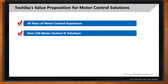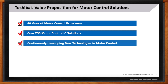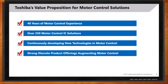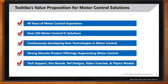Spinning a motor is one thing, but making a motor efficient is a different thing — it requires a lot of new techniques, so we continue to invest and bring in new technologies. We have a strong discrete group with hundreds of MOSFETs and IGBTs that augment motor control. Technical support is also very important — we have development boards, reference designs, video tutorials, and even SPICE models to facilitate designers.